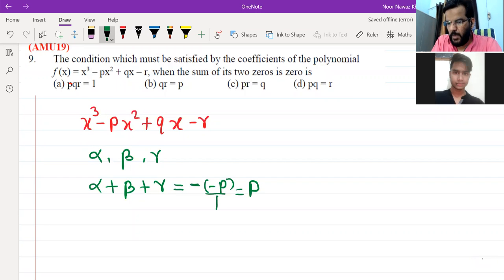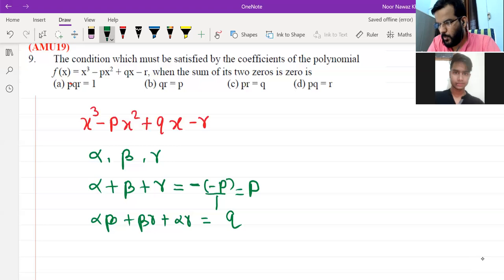Then we have another alpha beta, beta gamma, alpha gamma. And that will be c upon. This is minus, then plus. So this will be q upon.